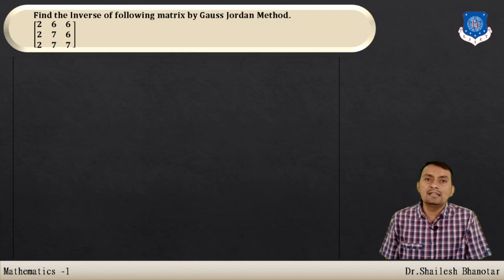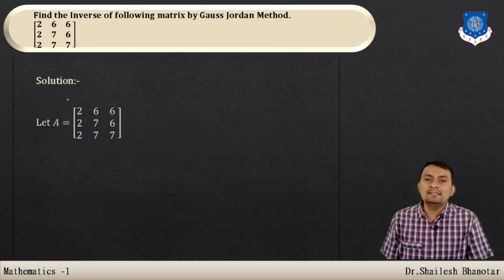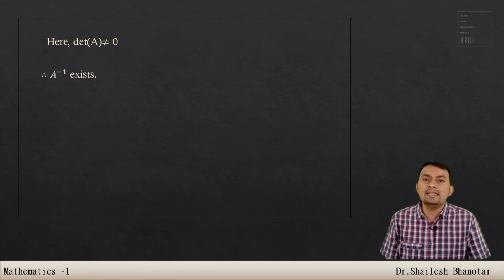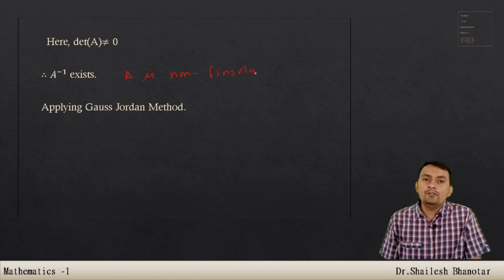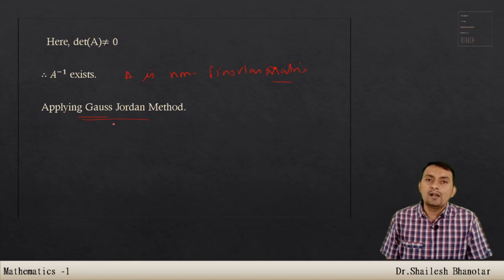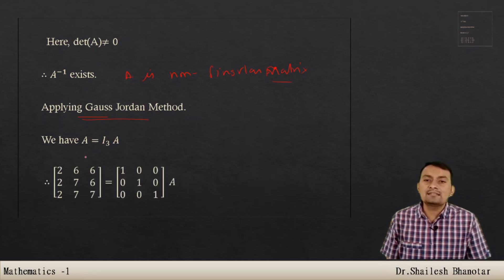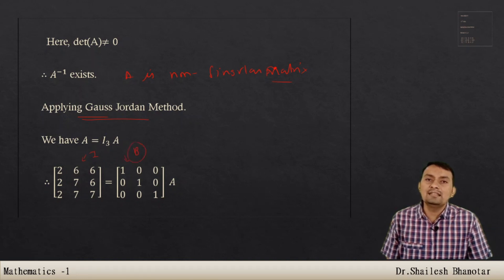Find the inverse of the matrix using the Gauss-Jordan method. Given matrix A = [[6, 6, 2], [7, 6, 2], [7, 7, ?]], first compute the determinant — it is non-zero, so A is non-singular and A⁻¹ exists. Apply the Gauss-Jordan method: set up [A | I₃] and apply row operations to transform A into the identity.